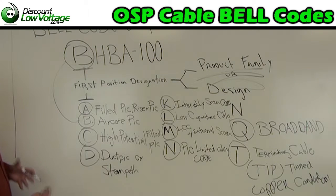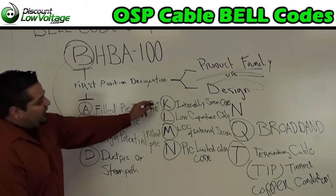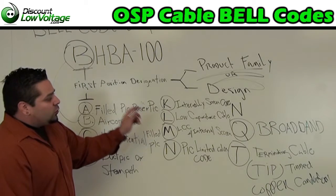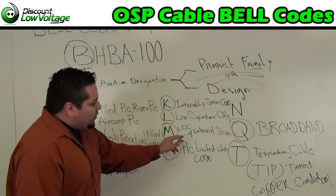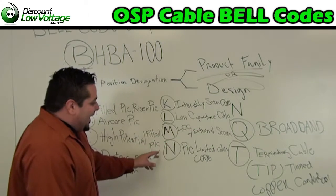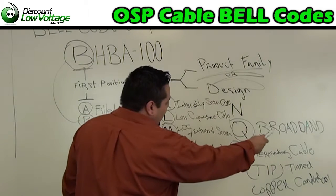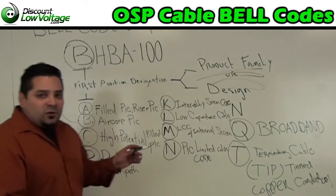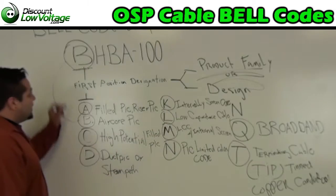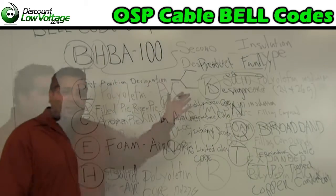C is a high potential filled PIC cable. D, duct PIC or steam path cable. K, internally screened core. L, low capacitance cable. M, a low capacitance cable with an internal screen. N, PIC limited color code cable. Q, broadband. T, terminating cable. TIP, 10 copper conductors. So B is what we have here, and this tells us our design of our cable.